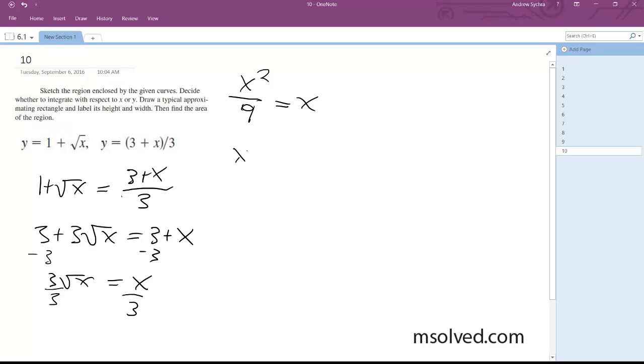And then we have x squared over 9 minus x equals 0. Factor out an x: x times x over 9 minus 1 equals 0. And finally the intersection points we're going to get are x is equal to 0 and 9.